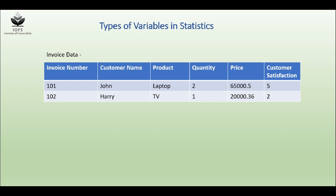You have invoice number, customer name, product, quantity, price and customer satisfaction. Let's see what kind of variables we have. So invoice number, customer name and product.